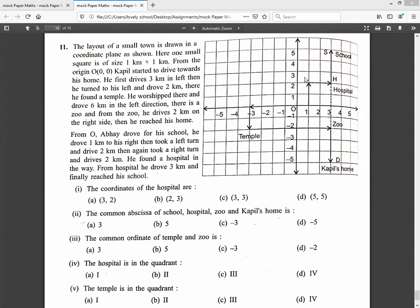Three comma two. Yes, as you can see, the hospital is marked with point H, and the coordinates of H are three on the x-axis and two on the y-axis. Therefore, option A, that is (3, 2), is correct.